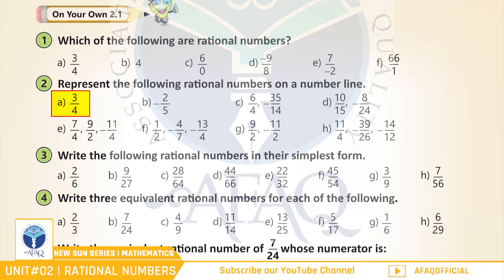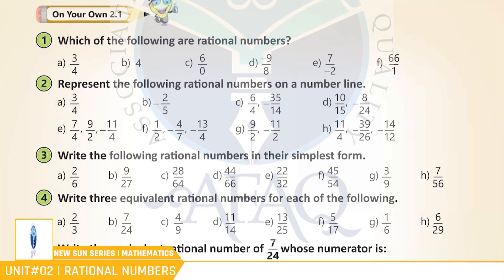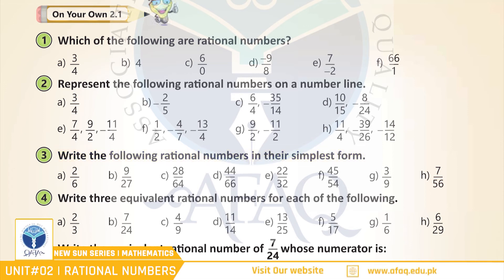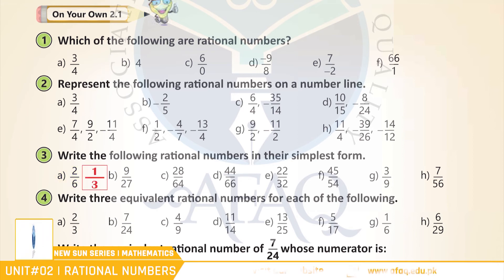اس سوال کے اگلے پارٹس آپ نے خود حل کرنے ہیں. Question number 3: Write the following rational numbers in their simplest form. A: 2 by 6. Good. 1 over 3.